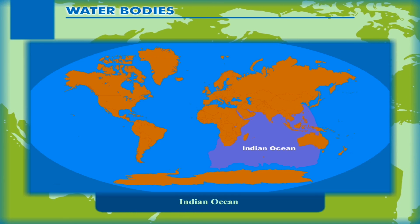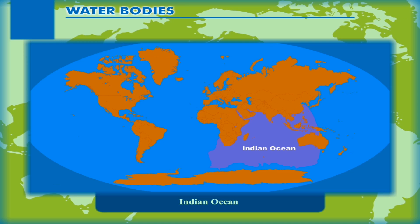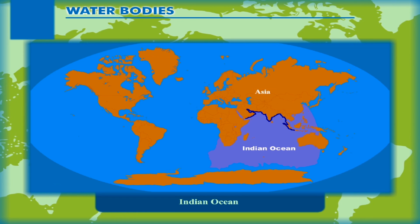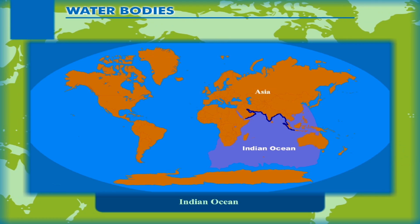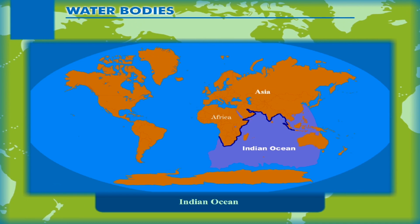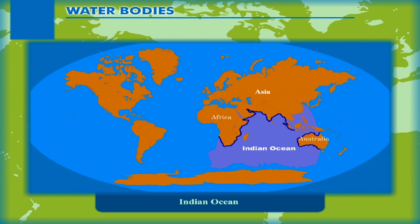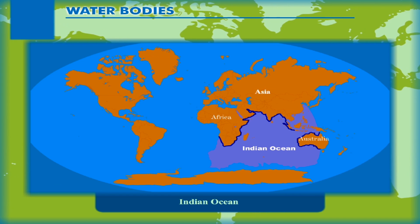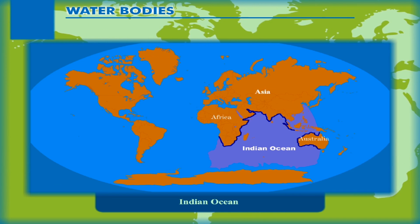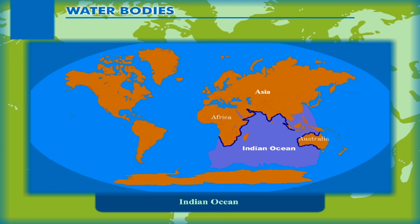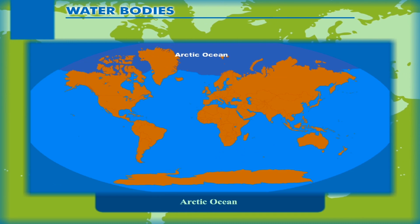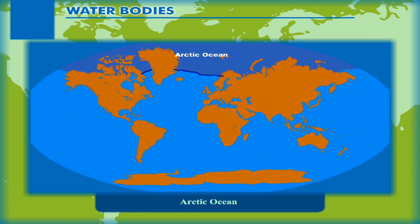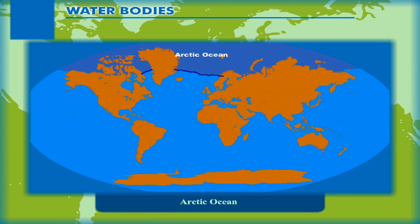Indian Ocean: It is the only ocean named after a country, that is India. The shape of the ocean is almost triangular. In the north-south it is bounded by Asia, in the west by Africa, and in the east by Australia. The part lying west of Asia, between northeastern Africa and the Arabian Peninsula, is called the Arabian Sea.